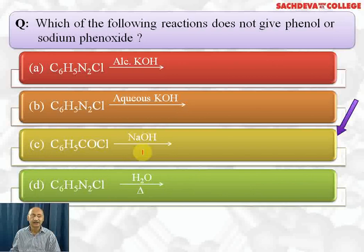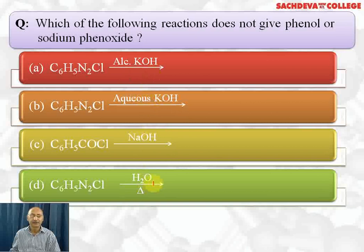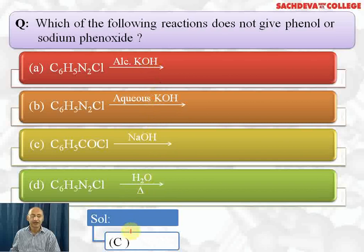C6H5COCl when reacted with NaOH forms C6H5COONa (sodium benzoate) plus HCl — sodium benzoate is formed, not phenol. Benzene diazonium chloride, whether treated with aqueous KOH, alcoholic KOH, or water, leads to the formation of phenol. Sodium phenoxide is also formed because phenol, being acidic in nature, reacts with the base to form potassium or sodium phenoxide in those cases. So the correct answer is C, which does not give phenol.